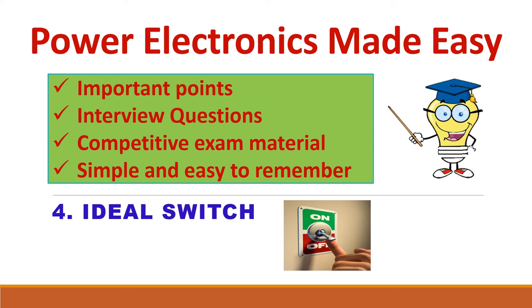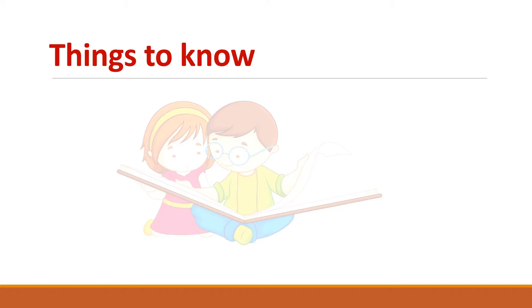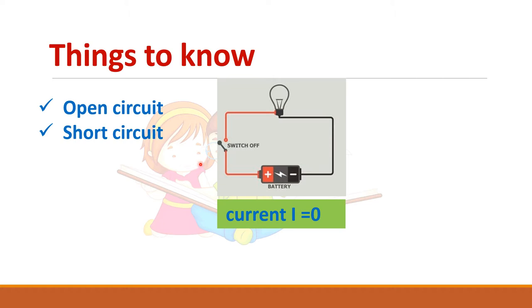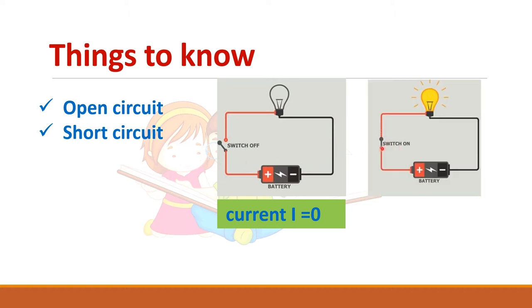Let us see about the ideal switch. Before going to the topic we should know certain things like what is an open circuit and short circuit. In this circuit, the switch is open, so ideally the current through this switch should be zero. In case of a short circuit, the voltage across this switch should be zero.